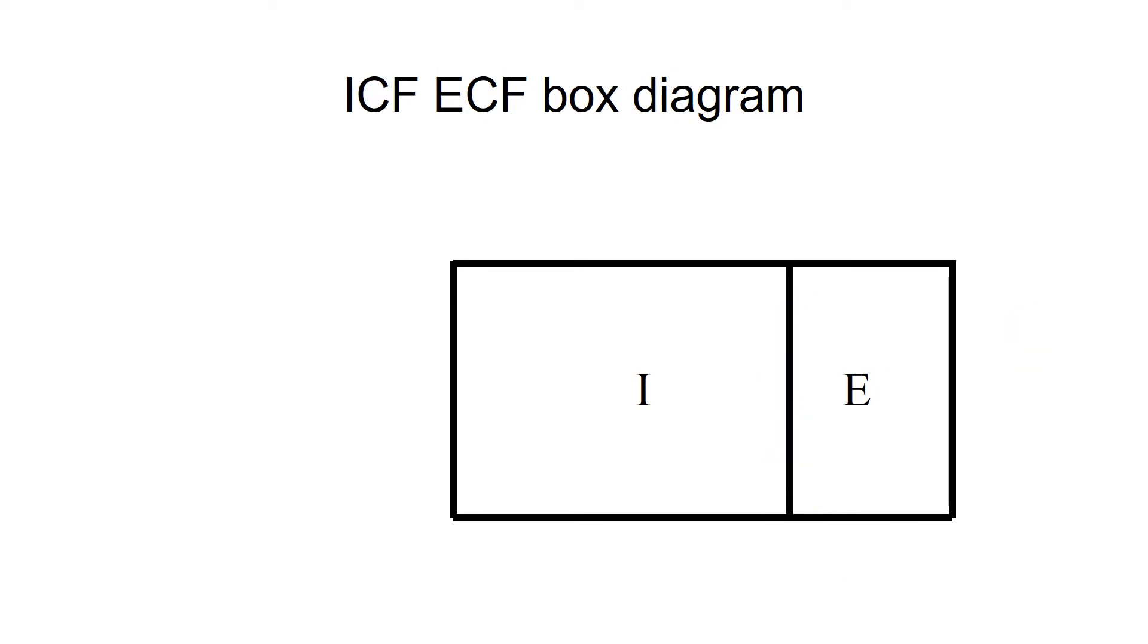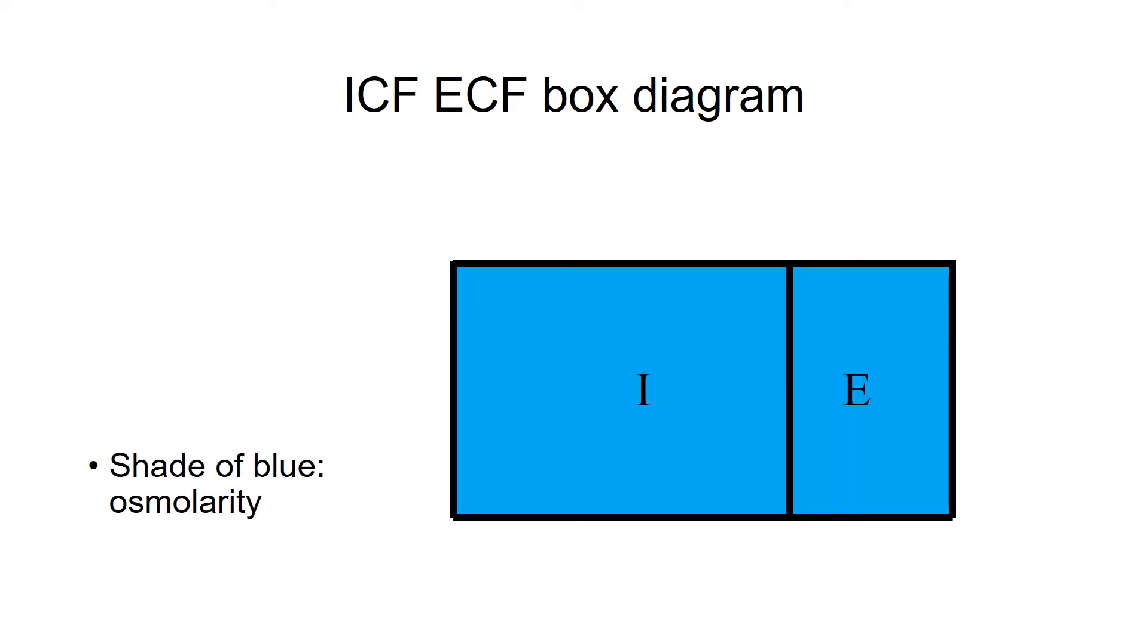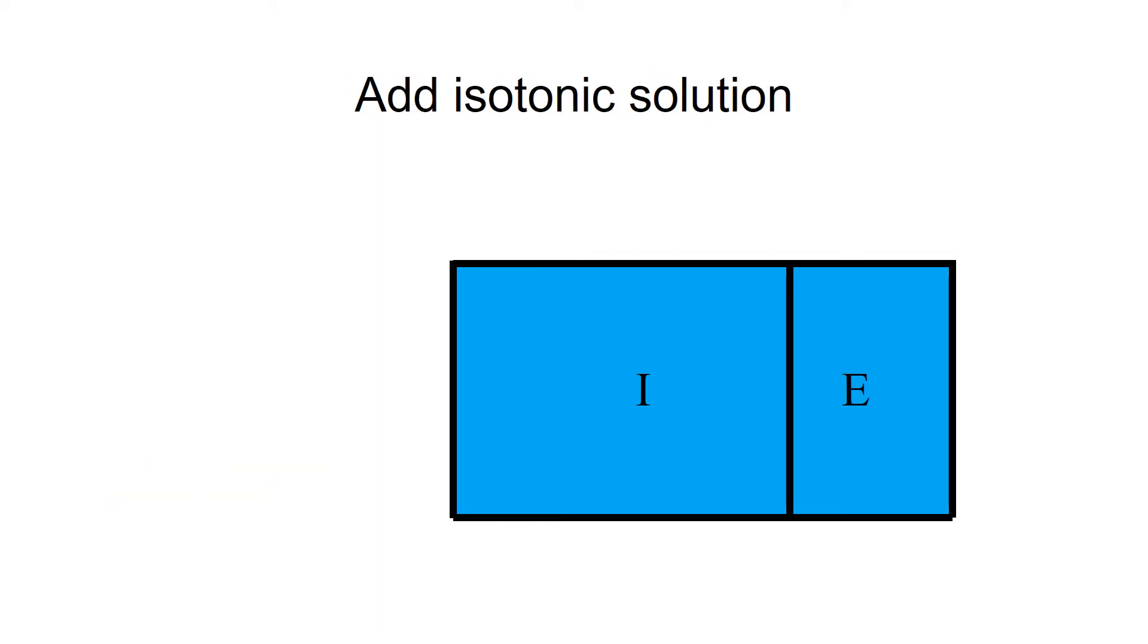In the next few slides, I'm going to utilize different shades of blue to represent osmolarity. The first example is adding isotonic solution. In all our examples we are changing the properties of extracellular fluid, and the intracellular fluid is only indirectly affected by movement of water when there is an osmolarity difference. In this example we're isotonically increasing the volume of the extracellular fluid, which is represented by expansion to the right with no change in osmolarity. Therefore, the only change is an increase in ECF volume.